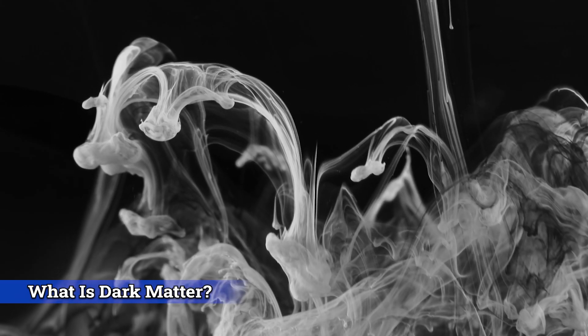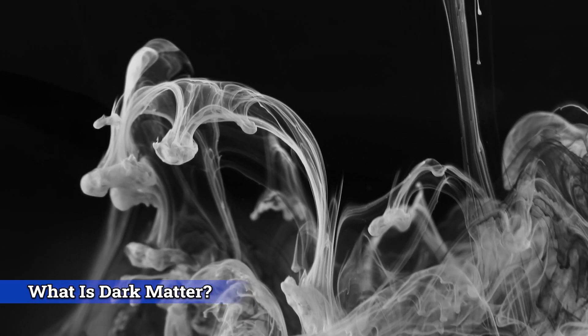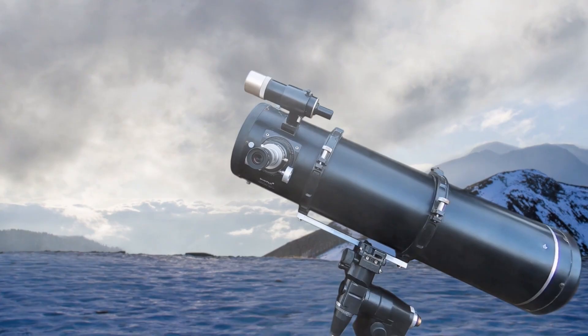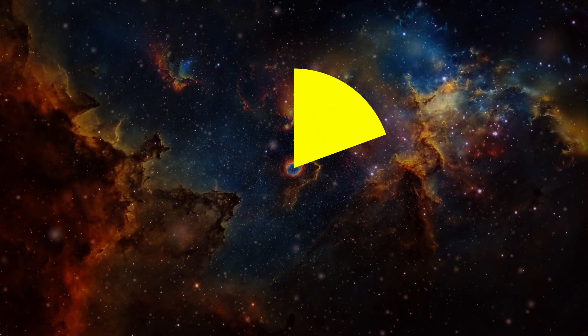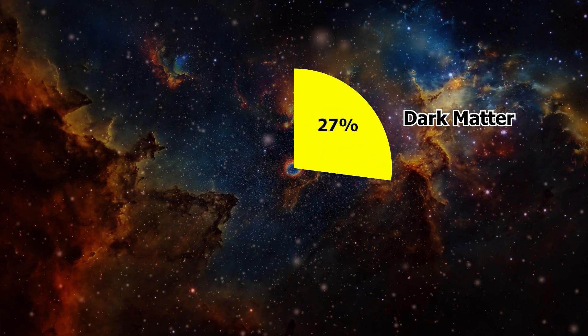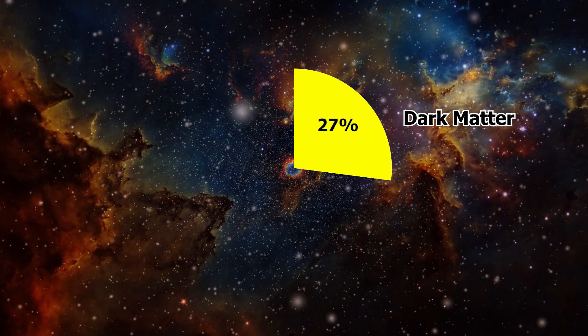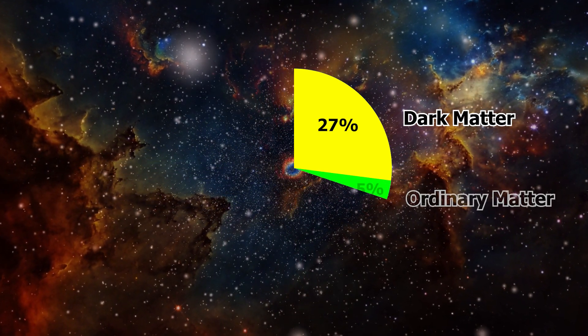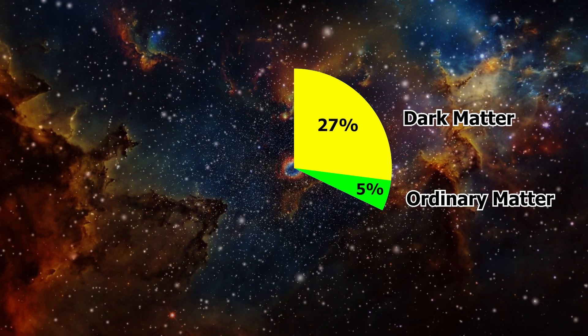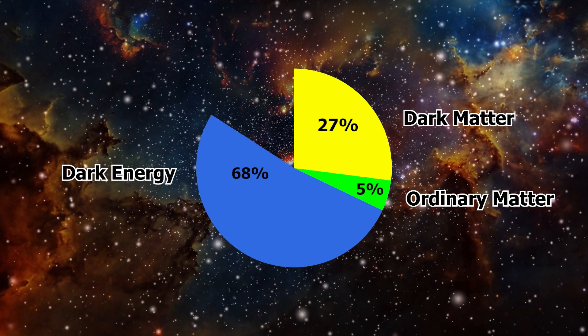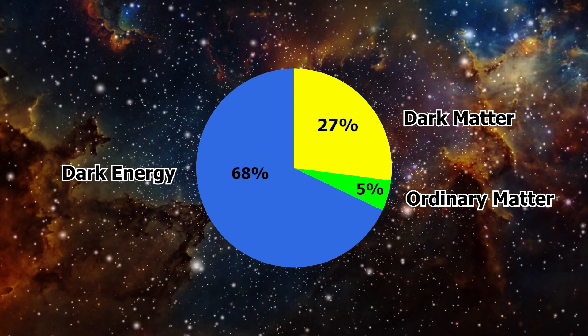Dark matter refers to a hypothetical form of matter that does not interact with light or other forms of electromagnetic radiation, making it invisible to our telescopes. It is estimated to account for approximately 27% of the total mass-energy content of the universe, while ordinary matter, which makes up stars, planets, and galaxies, constitutes a mere 5%. The remaining 68% is attributed to dark energy, which we will explore in detail shortly.